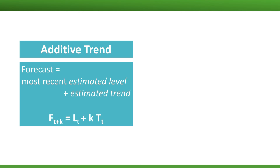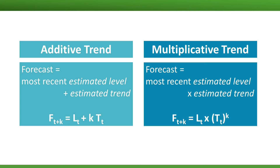Recall the two types of trend approximations: additive and multiplicative. We can adjust the Holt's exponential smoothing forecast formula to capture either. For an additive trend, we add to the current level L_t the estimated trend multiplied by the number of steps ahead k. For a multiplicative trend, we multiply the current level by the trend, raised to the power of k steps ahead. This means it's a good idea to first identify the type of trend in your data — for example, by using visualization — and then choose the appropriate Holt's exponential smoothing algorithm.